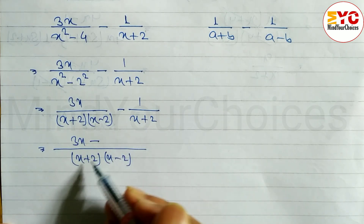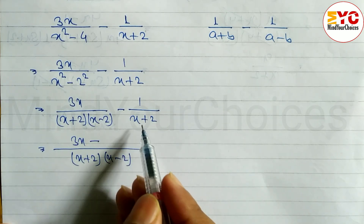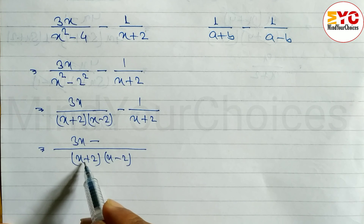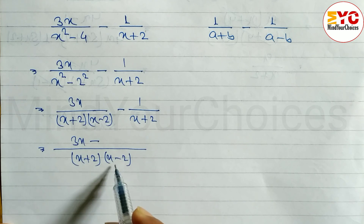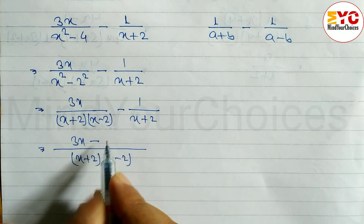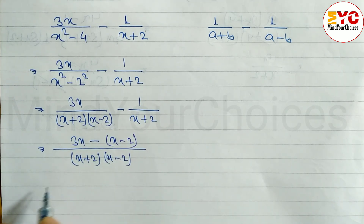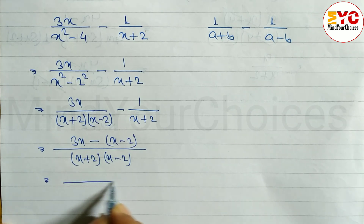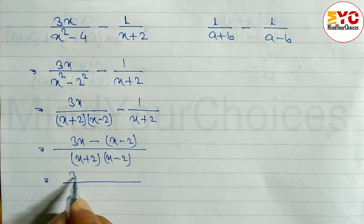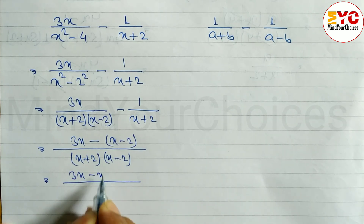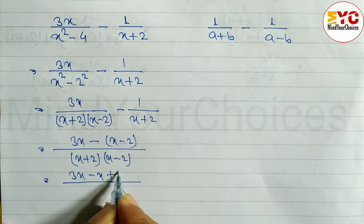Now again we divide the denominator: (x plus 2) and (x plus 2) cancel, leaving (x minus 2), multiplied by 1. So we write (x minus 2) here. After this, we open the bracket: 3x minus (x minus 2), which gives us 3x minus x plus 2.